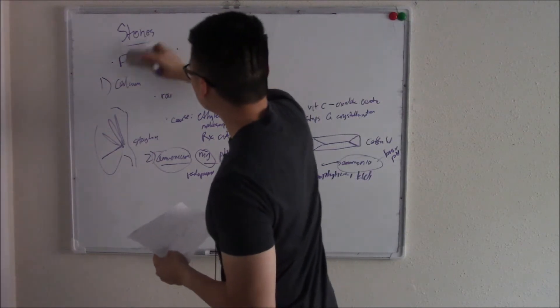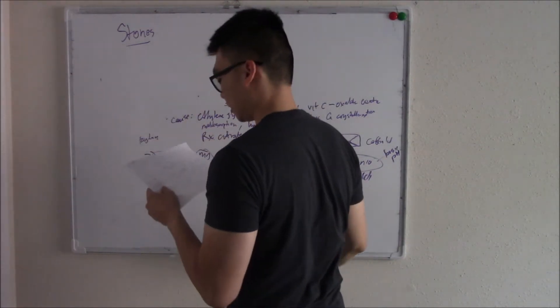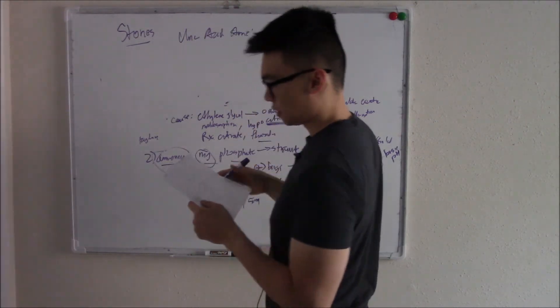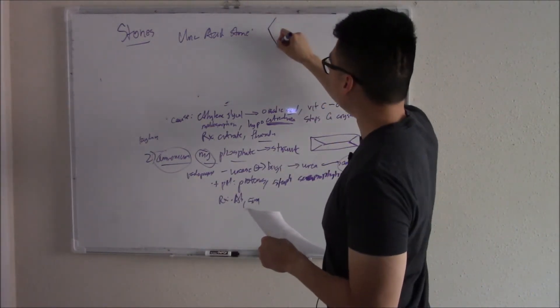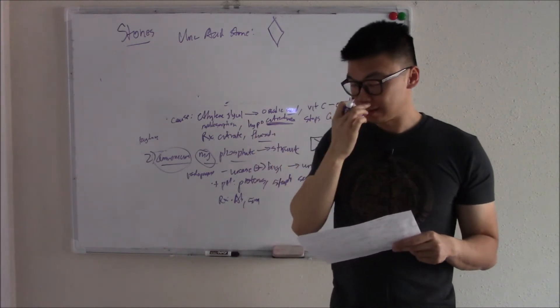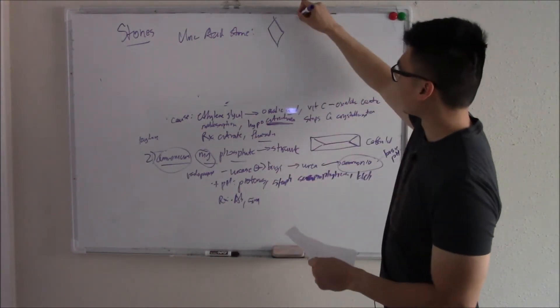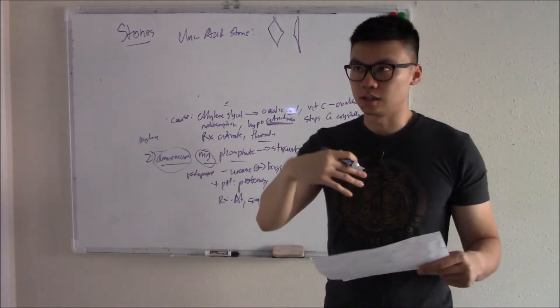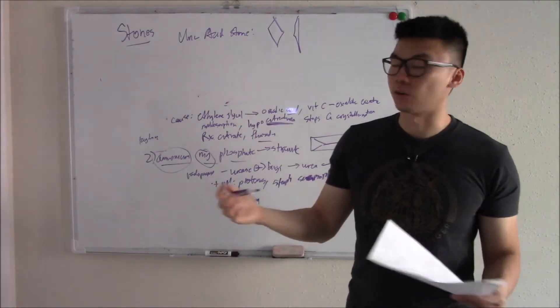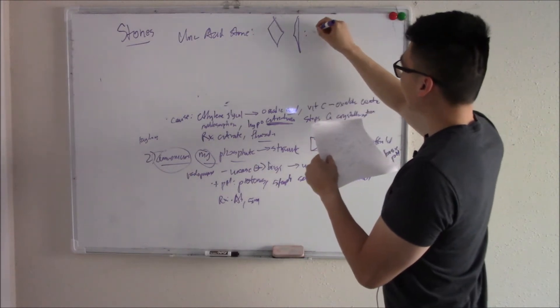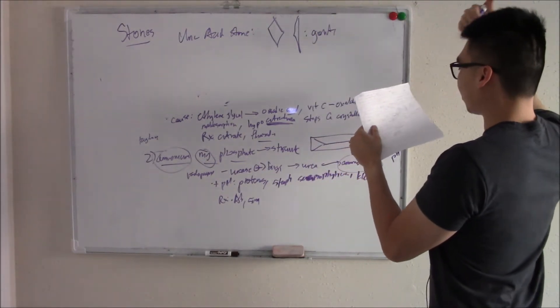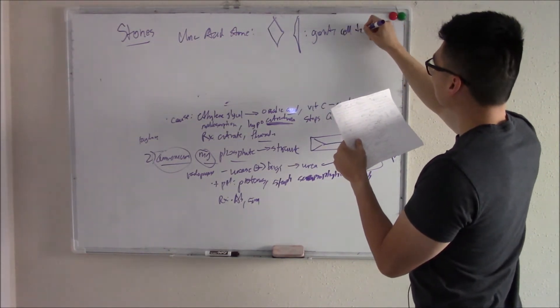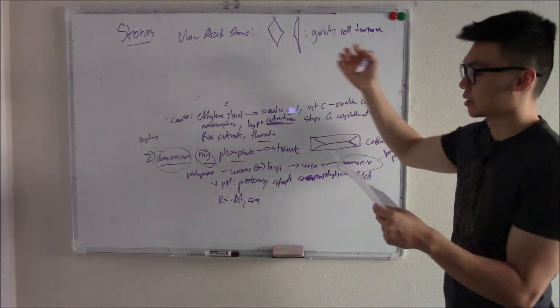The third stone is uric acid stones. Uric acid stones look kind of rhomboid shape. If you remember, uric acid is seen in gout, and they're kind of needle shaped. Because uric acid is found in gout, the risk factors for uric acid stones are the same as gout. Things like if you have gout, alcohol, red meats, as well as things like cell turnover. Remember when cells die, they lose their purine and that purine becomes uric acid.